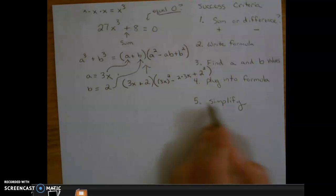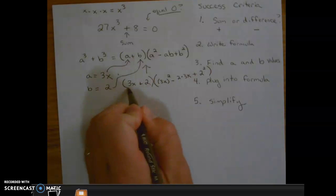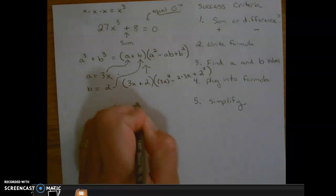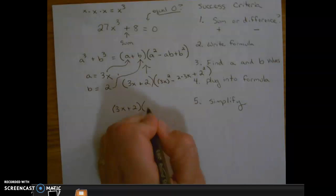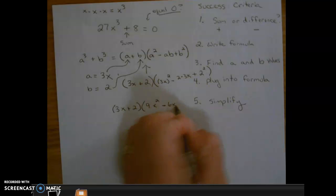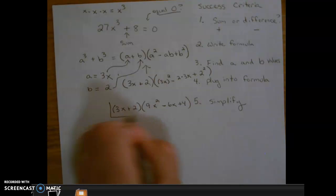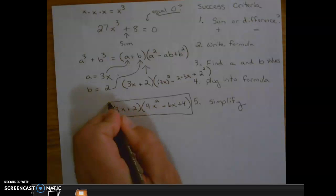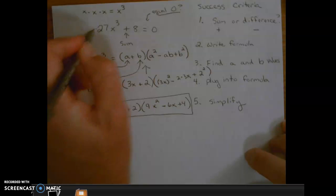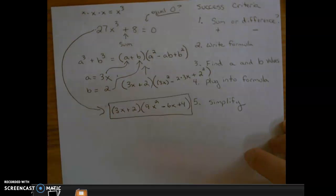Now the last step is to simplify. There's no simplifying to do here. We cannot add those together, so that's going to stay the same. 3² is 9, and x² is x². 2 × 3x is 6x, and 2² is 4. And that is our answer. So factoring the sum of two perfect cubes, the answer is (3x + 2)(9x² - 6x + 4).